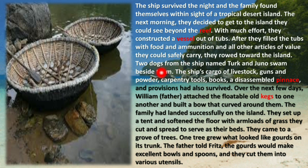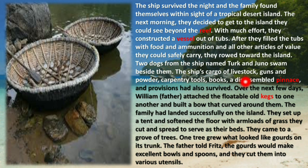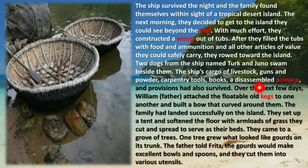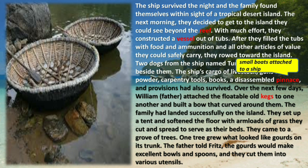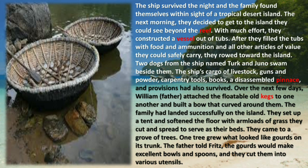Two dogs from the ship named Turk and Juno swam beside them. The ship's cargo of livestock — animals — guns and powder, carpentry tools, books, and a pinnace — a small boat attached to the ship — were also part of their resources.